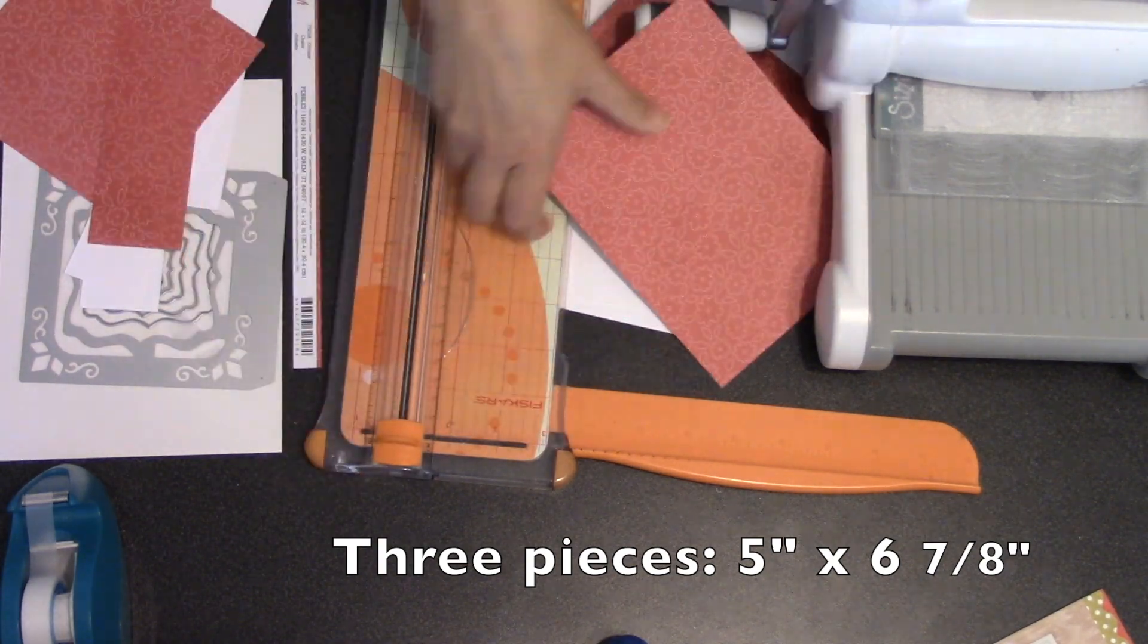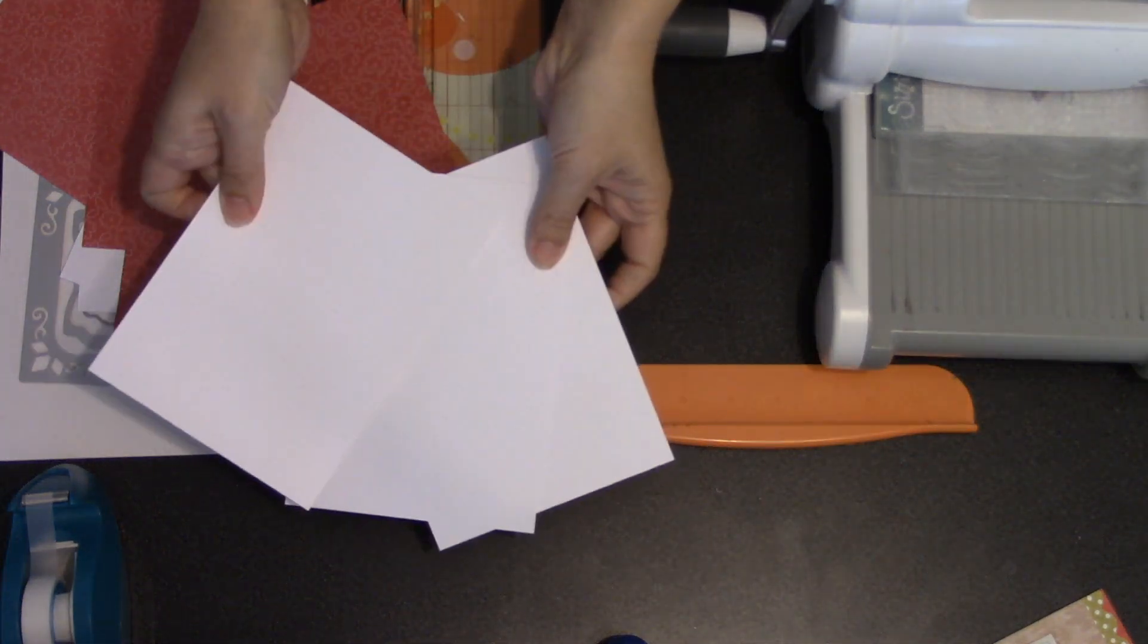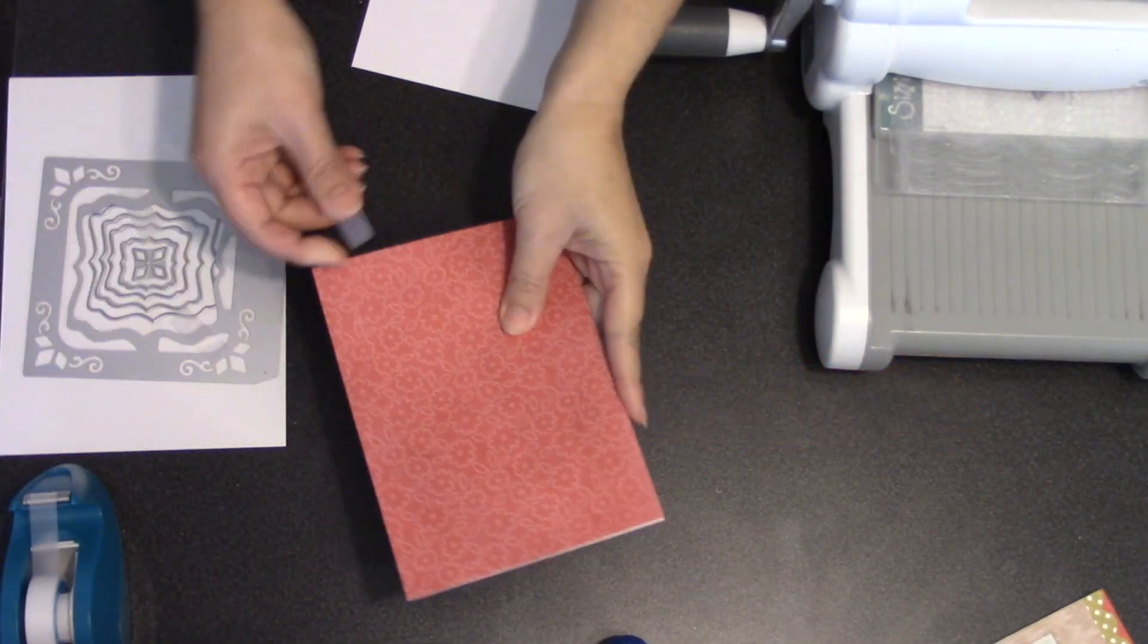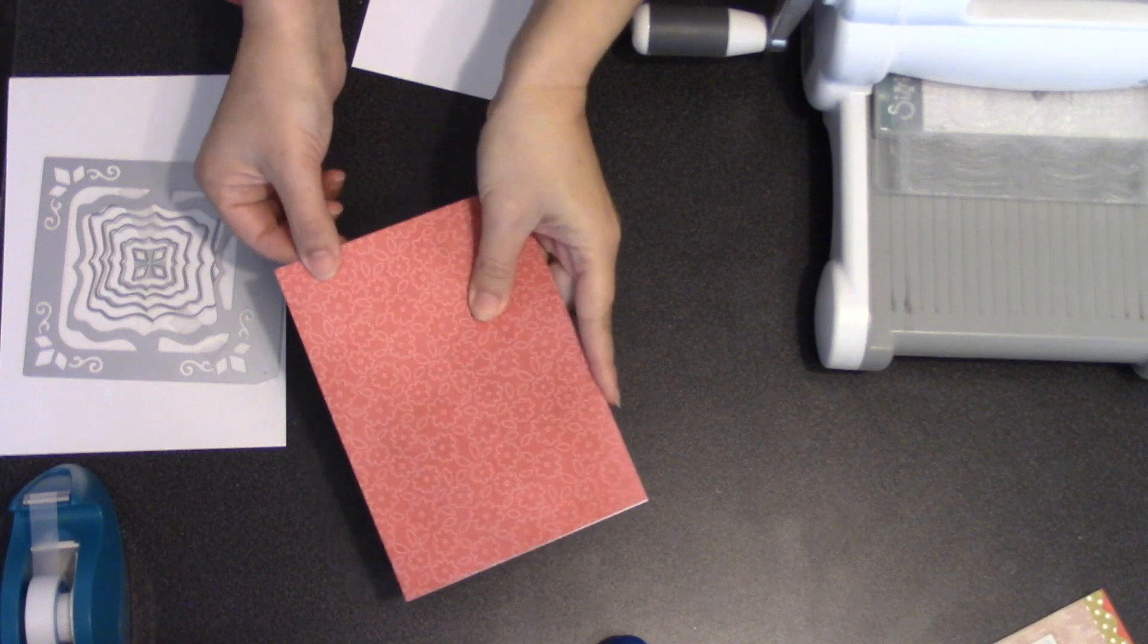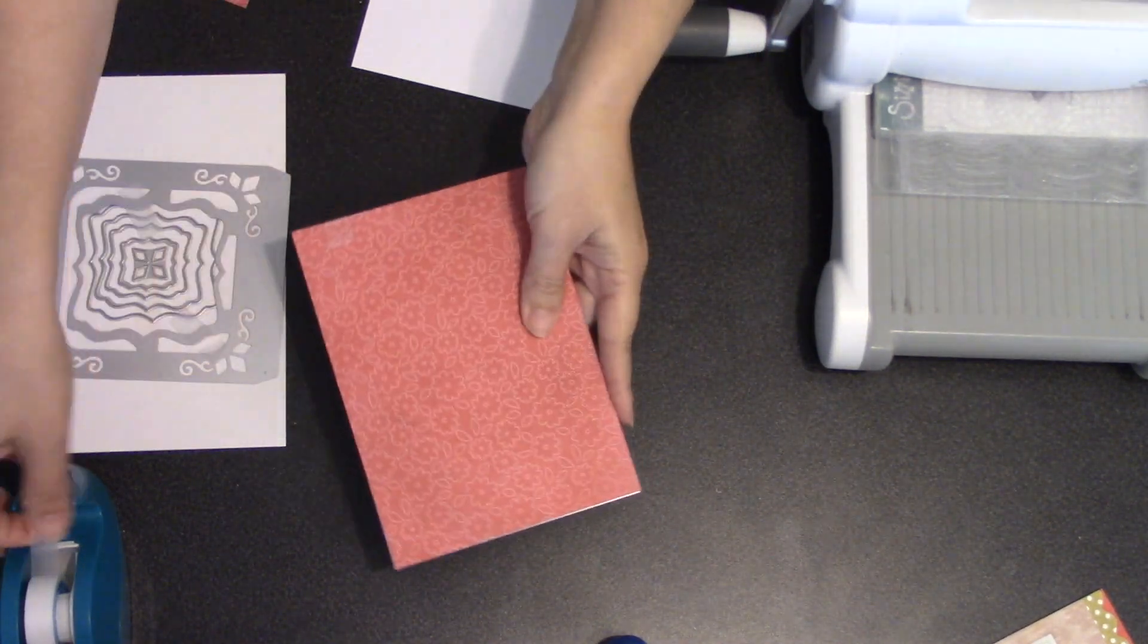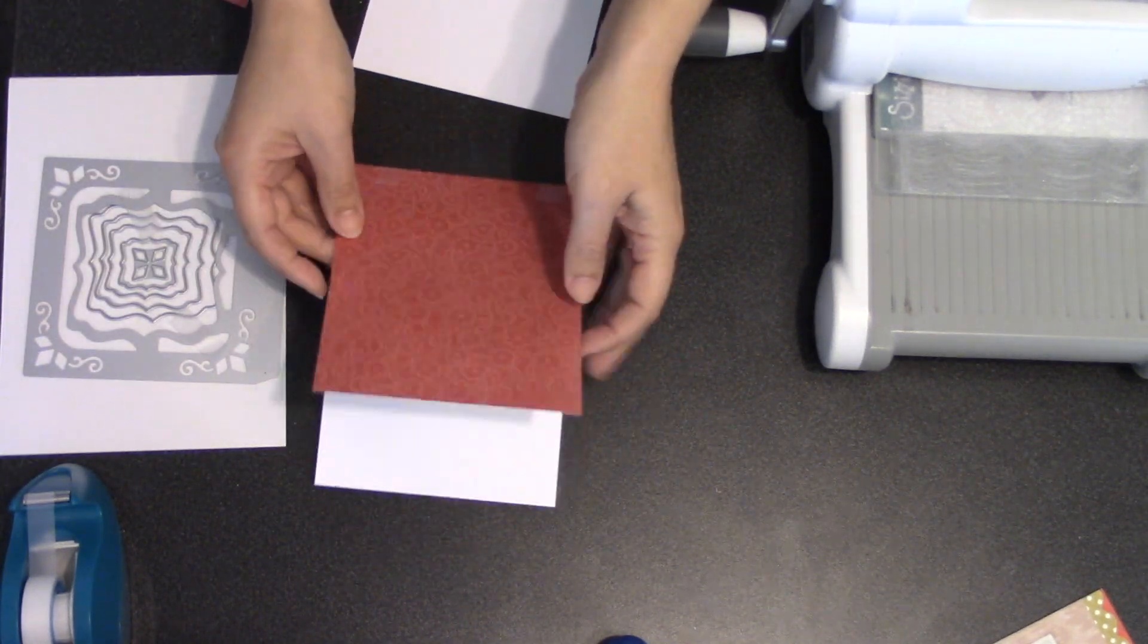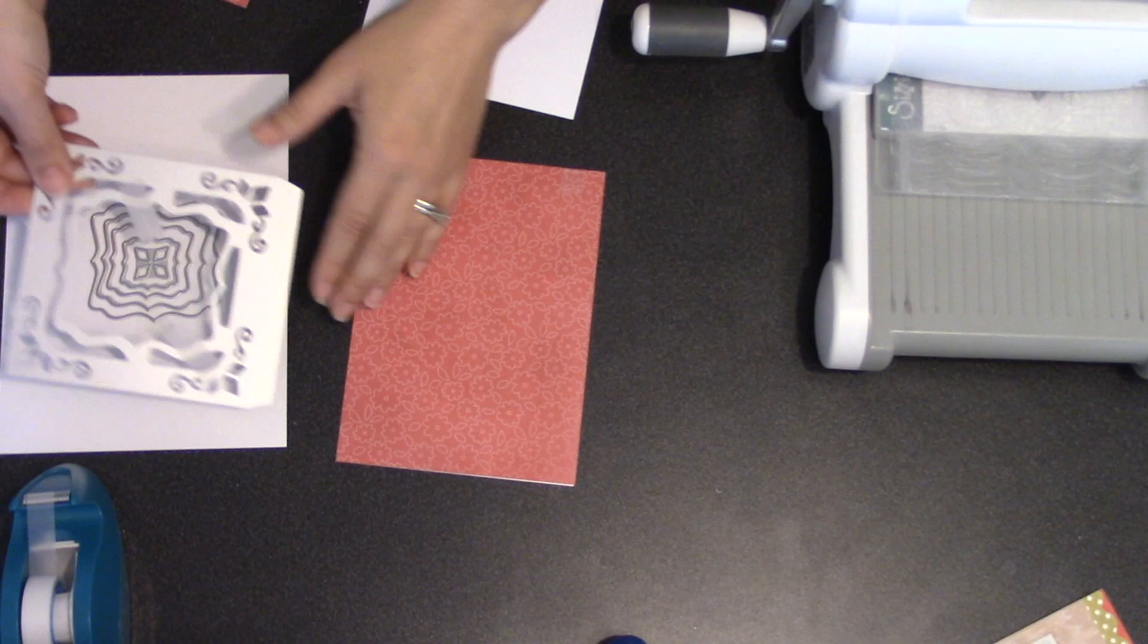And then just go ahead and repeat that with whatever patterned paper that you want to use for decoration. So now I'm going to do some die cutting, and I want to go ahead and die cut through my cardstock and my patterned paper at the same time. So I want those lined up and temporarily attached to each other using some removable tape, but I still want to be able to take those apart after die cutting.